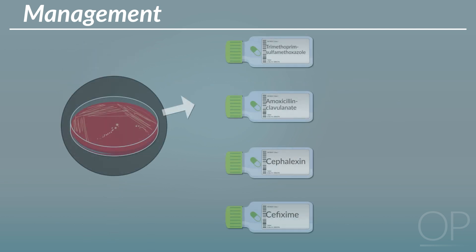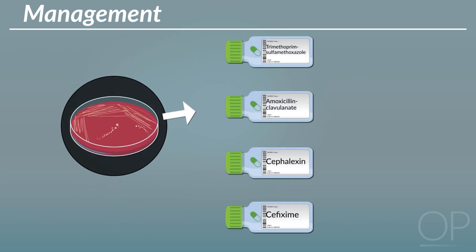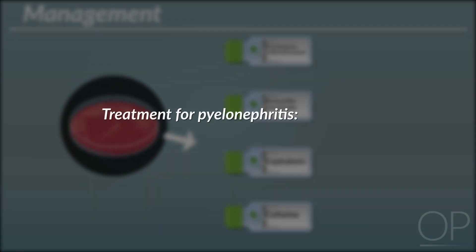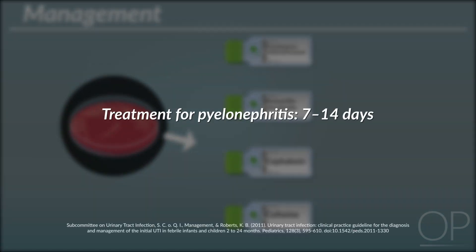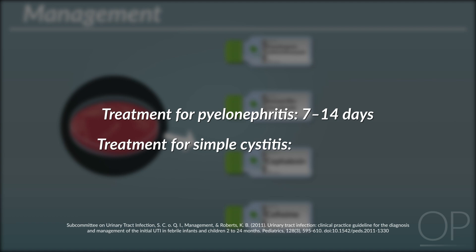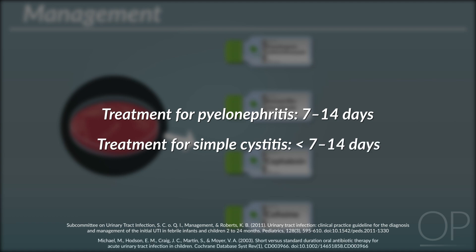Treatment can be tailored based on susceptibility results when culture data is available. The treatment course for pyelonephritis is 7 to 14 days. The treatment course for simple cystitis can often be shorter.